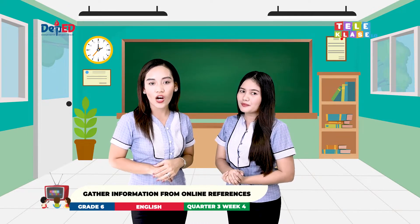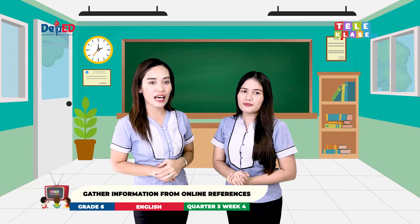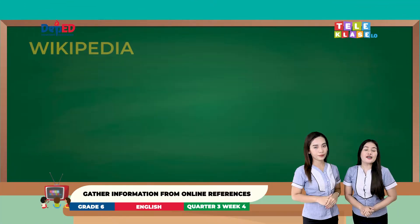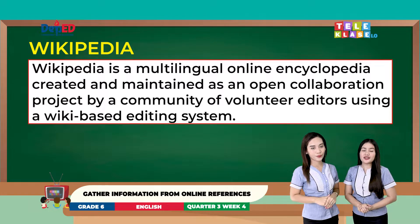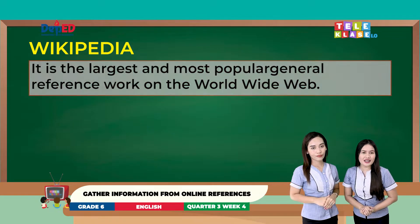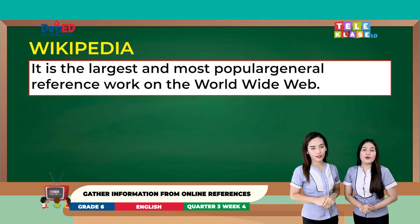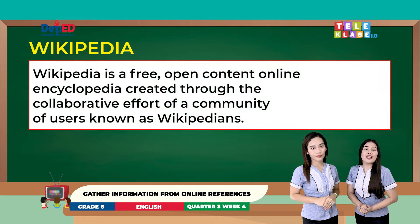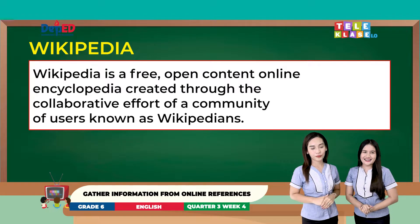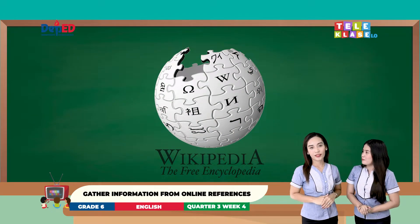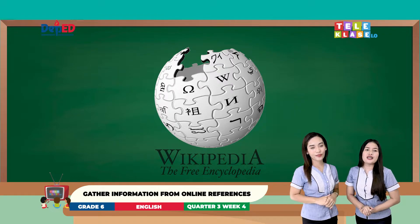There is another interesting online reference: Wikipedia. Wikipedia is a multilingual online encyclopedia created and maintained as an open collaboration project by a community of volunteer editors using a wiki-based editing system. It is the largest and most popular general reference work on the world wide web. Wikipedia is a free, open content online encyclopedia created through the collaborative effort of a community of users known as Wikipedians. But kids, since Wikipedia can be edited, it's important that you further validate the information you might obtain from Wikipedia using other sources.